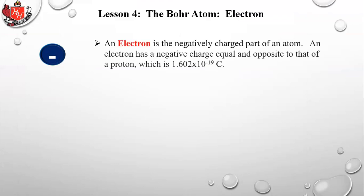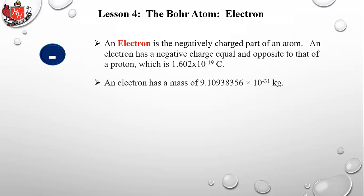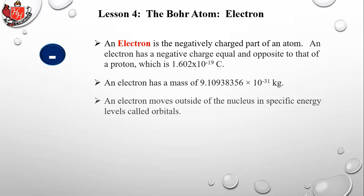An electron is the negatively charged part of an atom, with a charge equal and opposite to that of a proton — 1.602 × 10⁻¹⁹ coulombs. Its mass is very tiny compared to a proton's. An electron moves outside the nucleus in specified energy levels called orbitals.